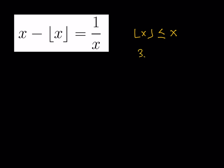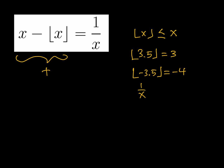If you have something like 3.5, it's basically going to take away the decimal part and give you the greatest integer less than or equal to the number, which is 3 in this case. But if you have a negative number, that's a different story, because the floor value needs to be less than or equal to the number itself. So the floor value of x is always less than or equal to x, which means the left-hand side is a non-negative quantity, meaning 1 over x is non-negative. Since x cannot equal 0, we can say x must be positive.